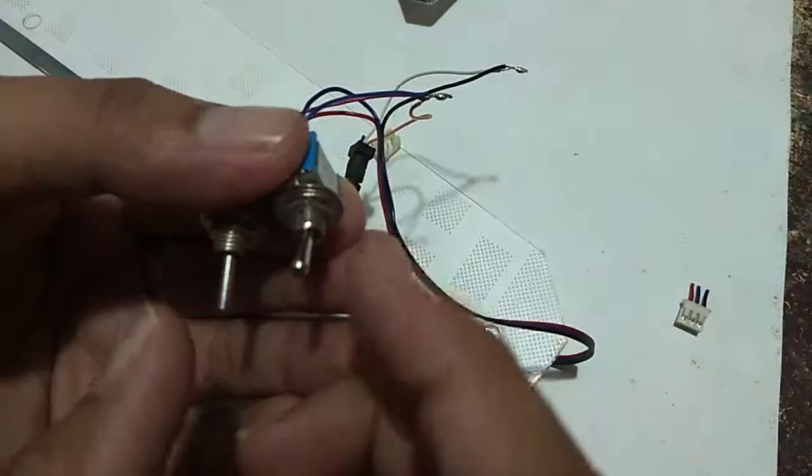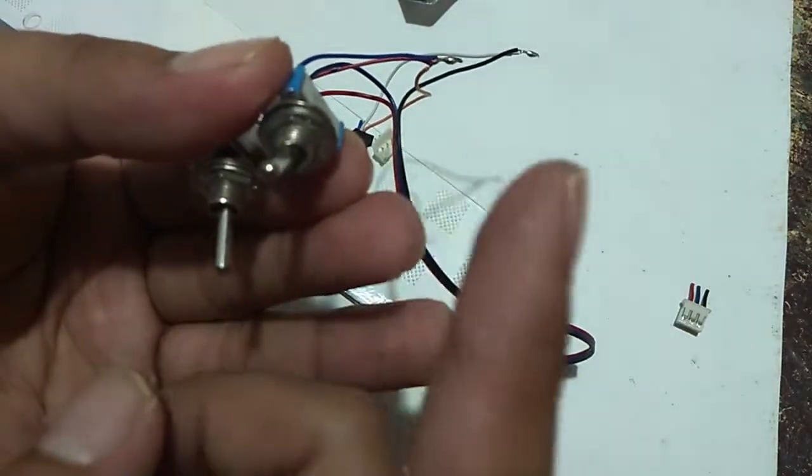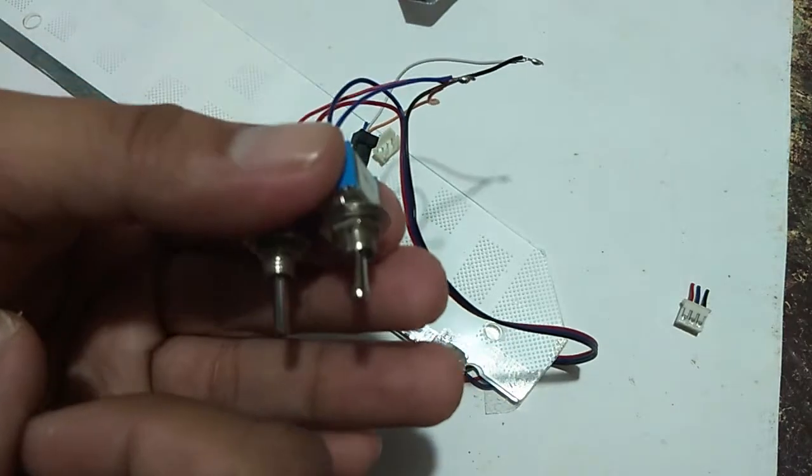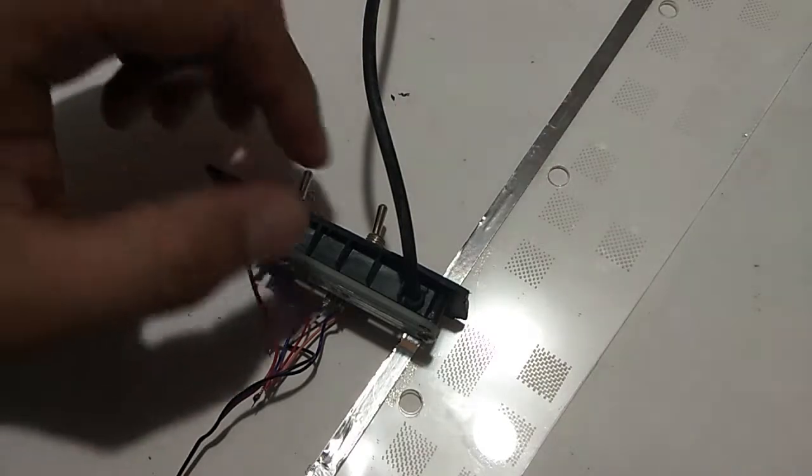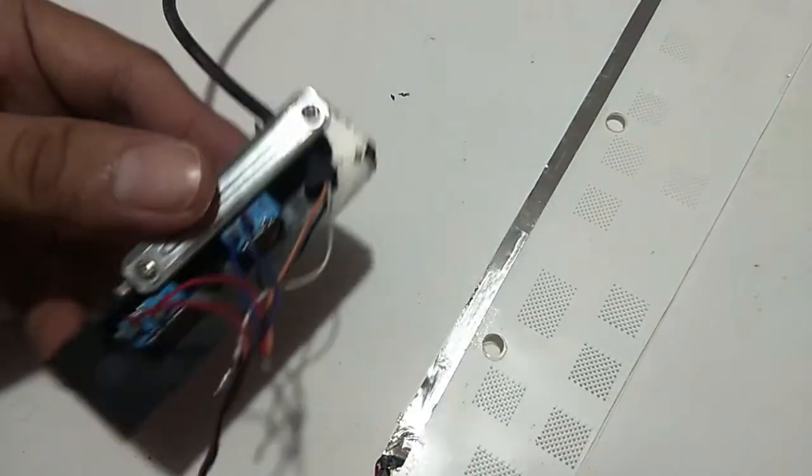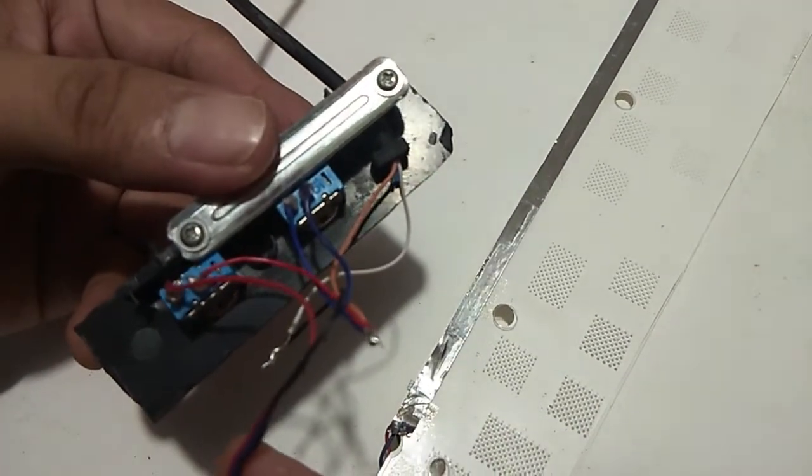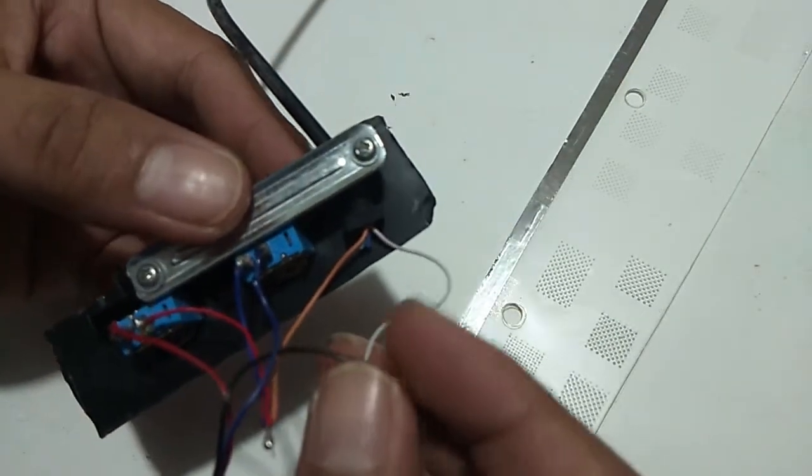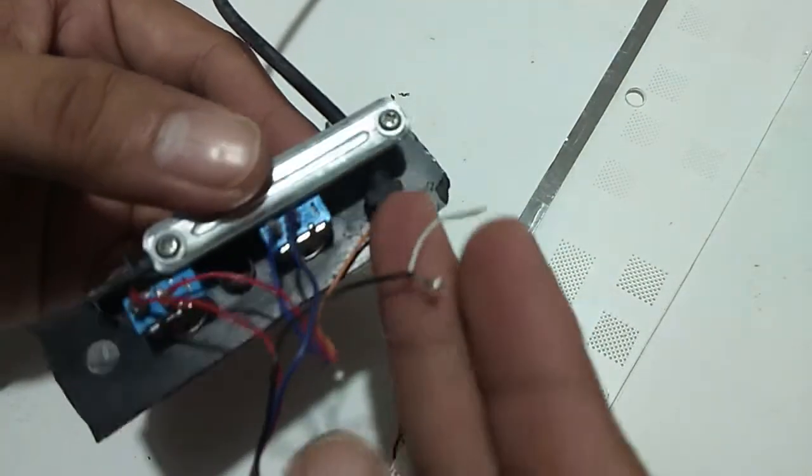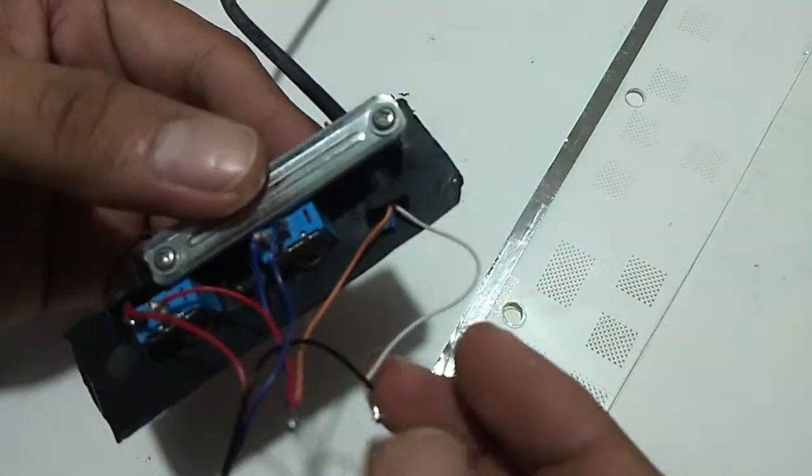Now we just have to find something where to put these switches. Okay guys, so we have already soldered all the wires. As you can see, we just need to secure it. Put some electrical tape on it. So let's check if it's working.